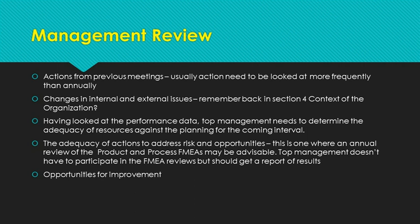Opportunities for improvement — we've talked about many different ways and we'll go into this more in Section 10. Actions from the previous meetings: did they actually get done? This is one of the reasons you should look at management review information more frequently than annually. If you're looking at it a year down the road and something has fallen through the cracks, that's a big problem. Changes in internal and external issues — this is where top management cycles back to Section 4 of the standard, context of the organization. Have they changed? How are they being monitored and measured? Has that changed? Do you need to add any or take any away?